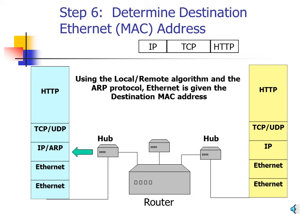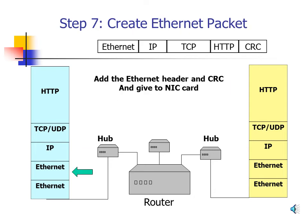Step 7: Create the Ethernet Packet. Ethernet takes the packet — which includes the IP header, TCP header, and HTTP information — and encapsulates it in an Ethernet header. The Ethernet header contains things like the source and destination MAC addresses. A CRC (Cyclic Redundancy Check) is then calculated and appended to the packet for error detection.